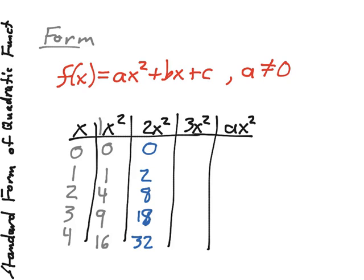For a being 3, we'll have 0, 3, 12, 27, and 48.